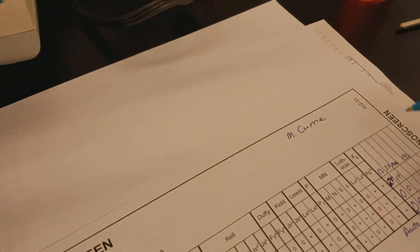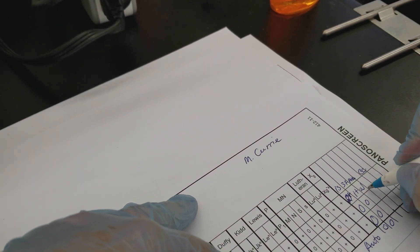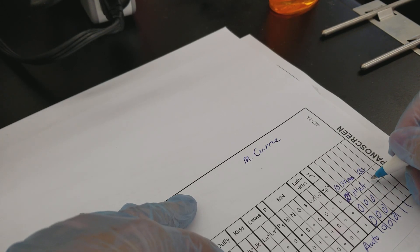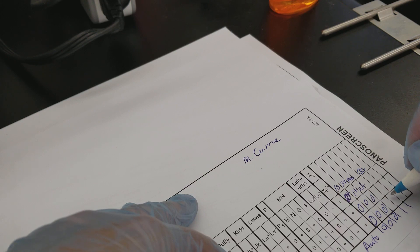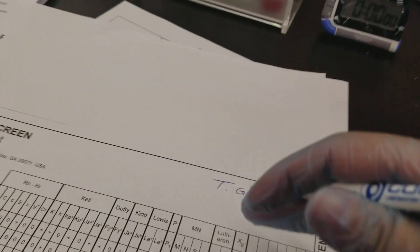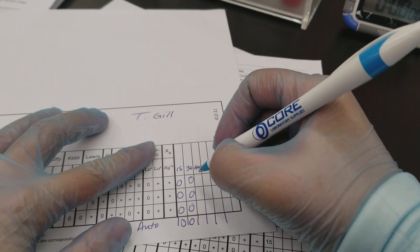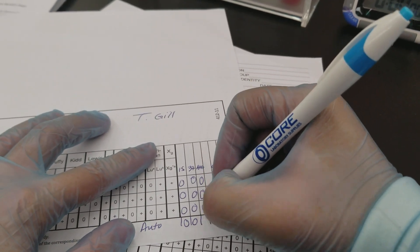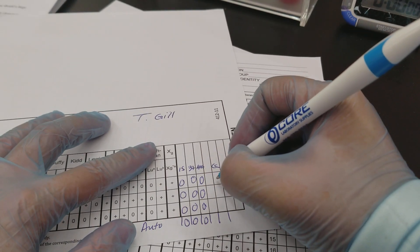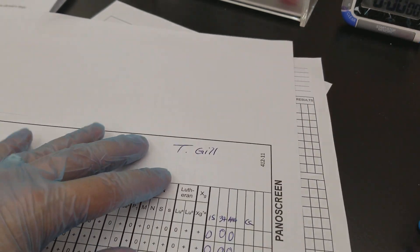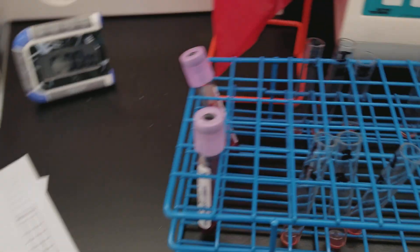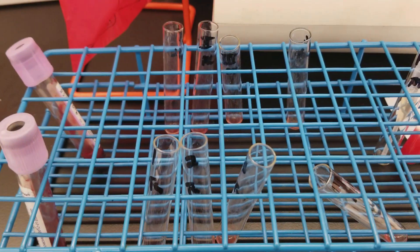All right, so now let's record those. So we have weak positive, and this is negative, negative, negative. So we have to add the check cells only to these three. Okay, with this patient we had negative all the way, so we're going to need to add check cells for all four of those. Okay, so let's do the check cells now.